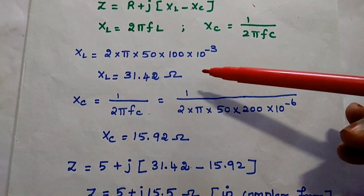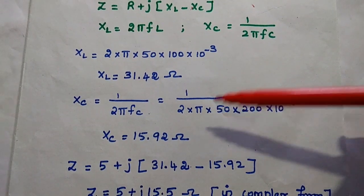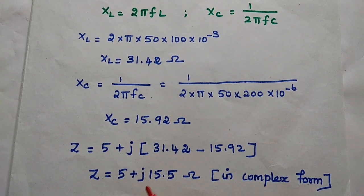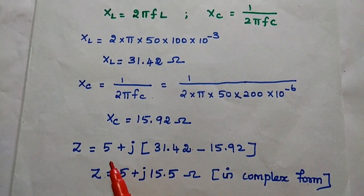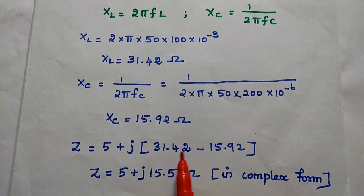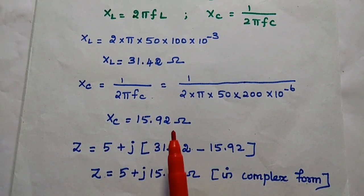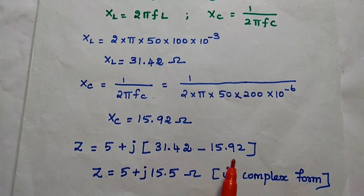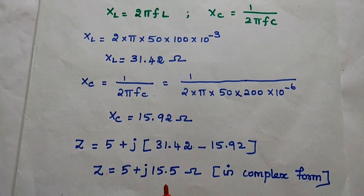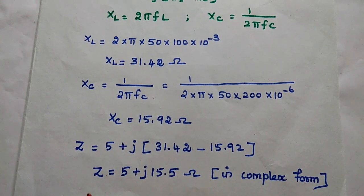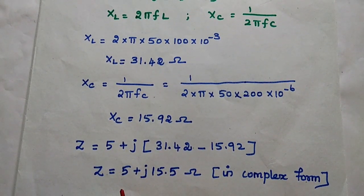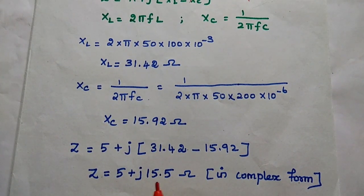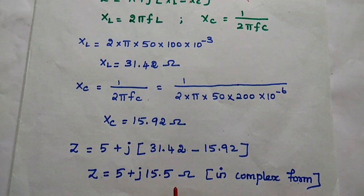Next we substitute the XL and XC values in the impedance formula. Impedance is equal to R replaced with value 5 plus J, XL is 31.42 minus XC value is 15.92. So 31.42 minus 15.92 gives 15.5 ohm. This is the impedance value in complex form — it consists of the real term and the imaginary term.